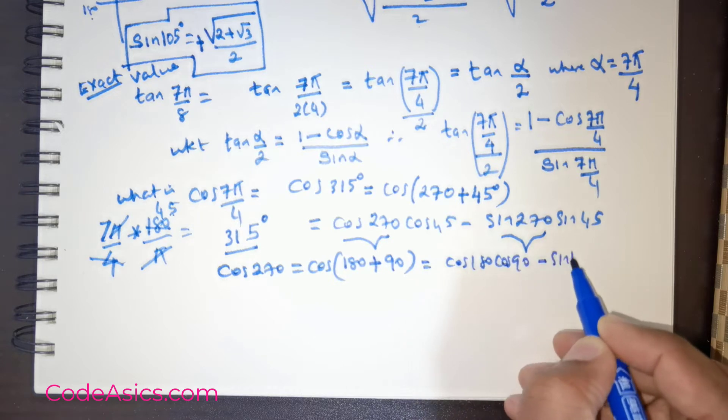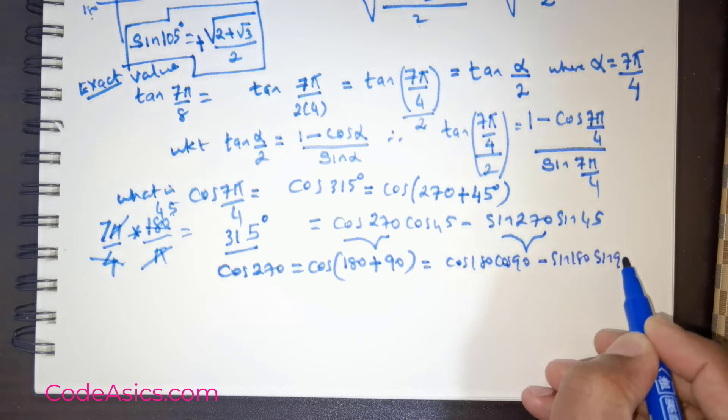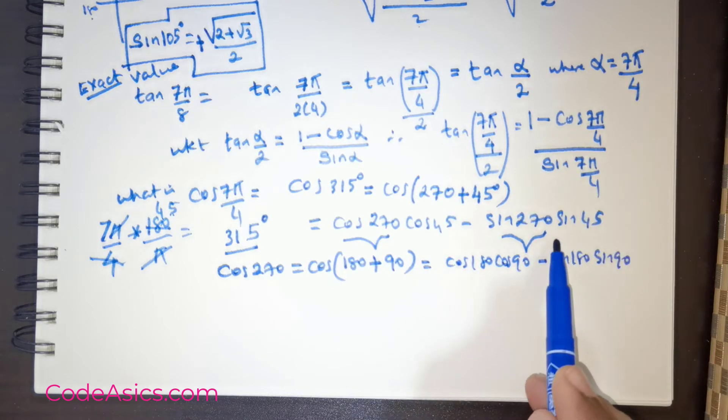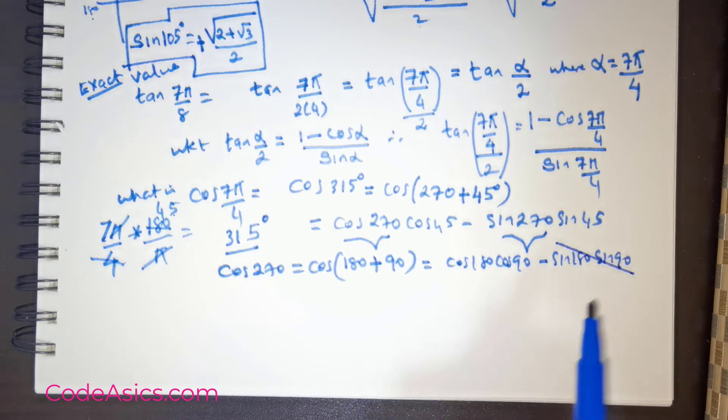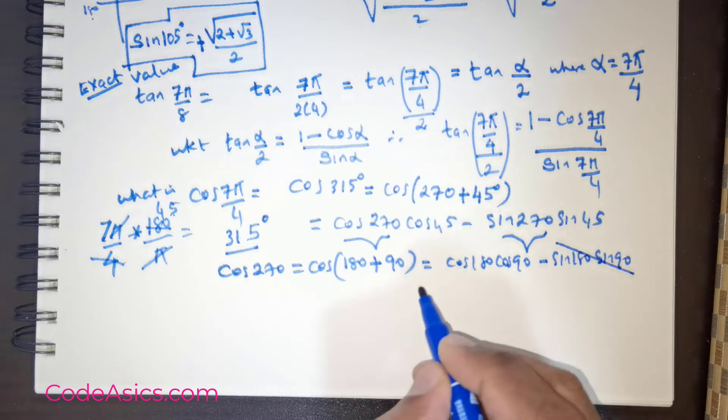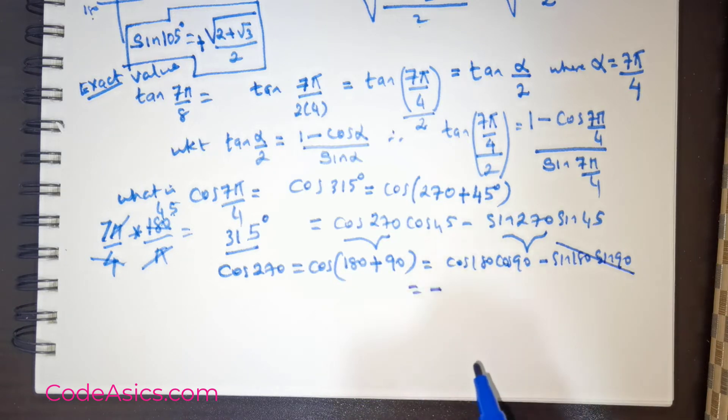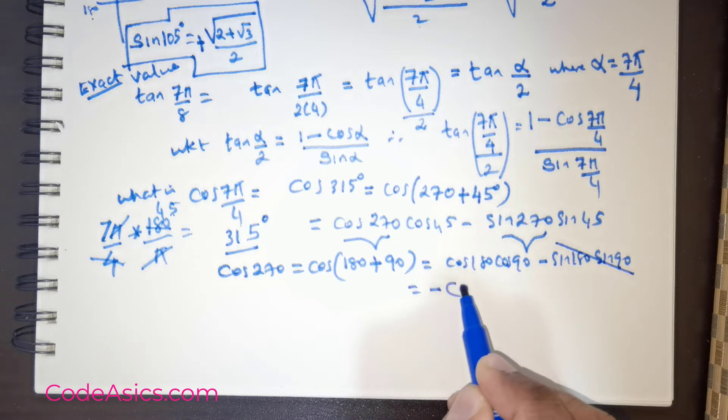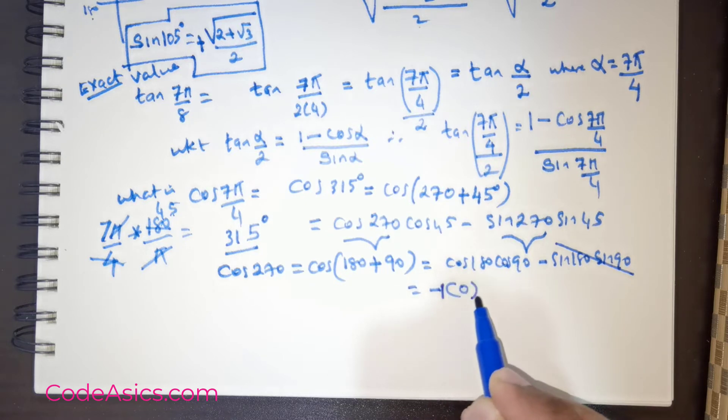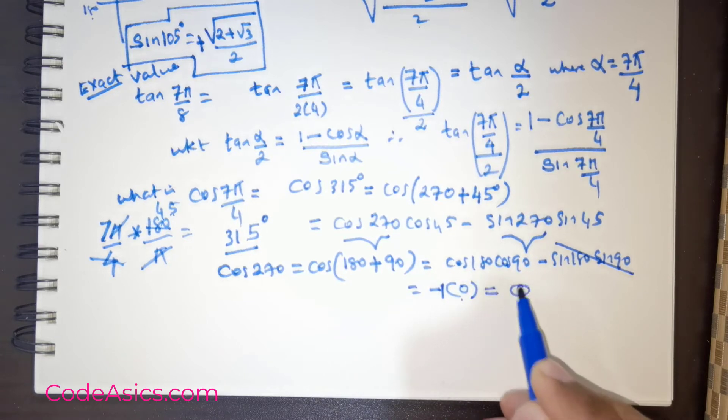So let me expand that. This is going to be cos 180 times cos 90 minus sin 180 sin 90. Now sin 180 is going to fall off because you got 180 there. Cos 180 is negative 1 and cos 90 is 0, so that's also producing 0. So cos of 270° is 0.